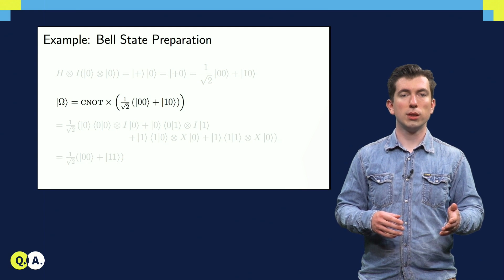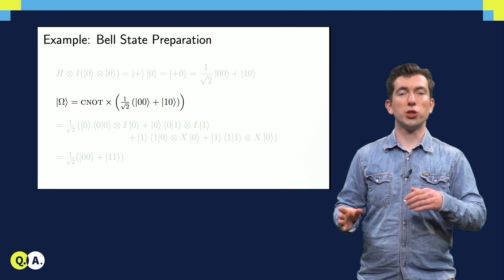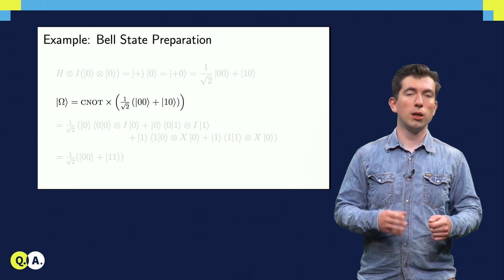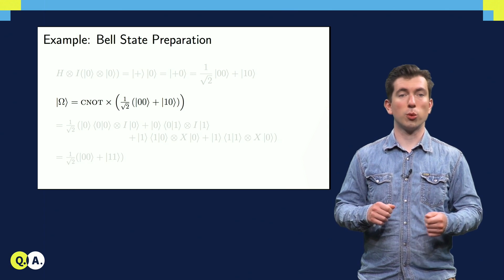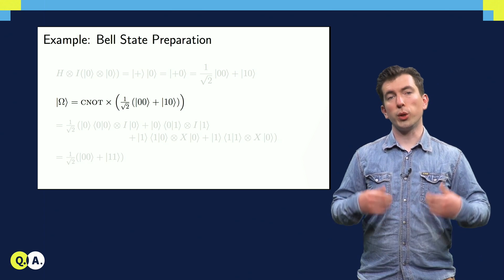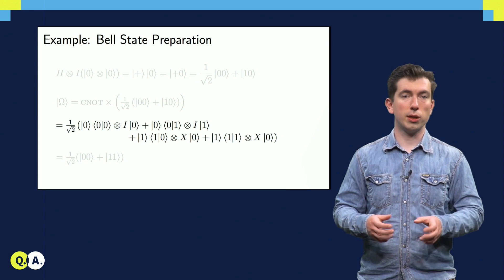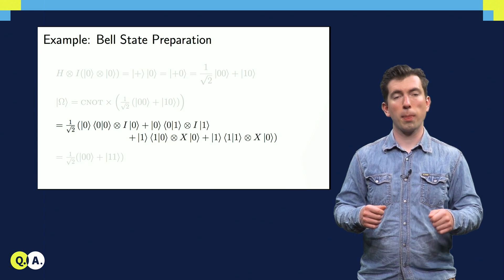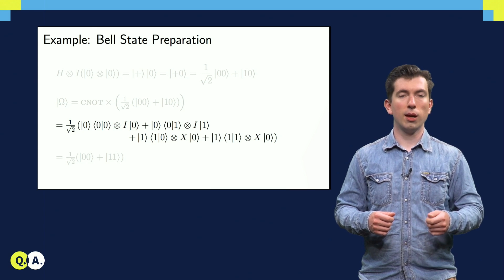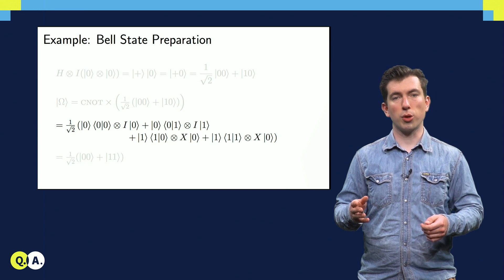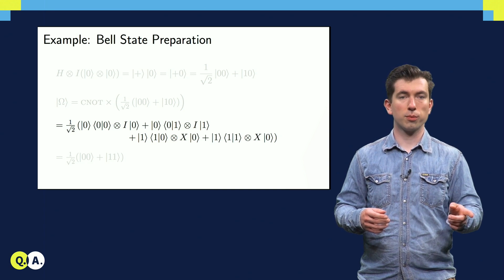Now, all we have to show is that the CNOT will take our state, which is 00 plus 10, to the 00 plus 11 state that we're after. If we insert the decomposition of the CNOT into tensor products that we saw earlier, we can see that the resulting state has coefficients proportional to these inner products of the 0 and 1 states.